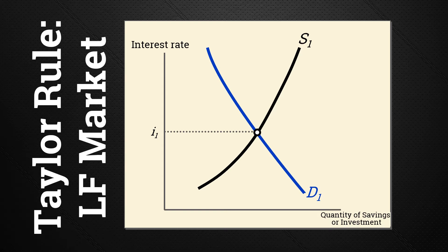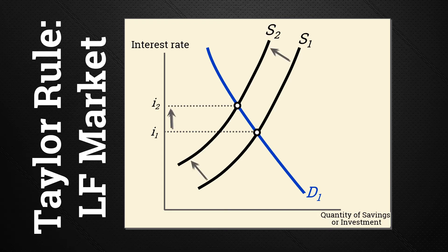If the Fed needs to increase the interest rate, it does this by contracting the money supply — for example, by selling bonds via open market operations. Selling bonds sucks money out of the system. This action will raise the price of loanable funds — the interest rate — and thus slow down the economy by lowering investment and large-scale consumption purchases, lowering total spending or aggregate demand. The opposite would be true for expansionary policy when inflation and/or output are below desired rates.